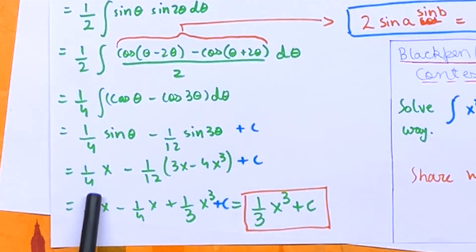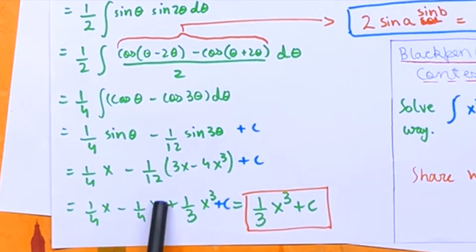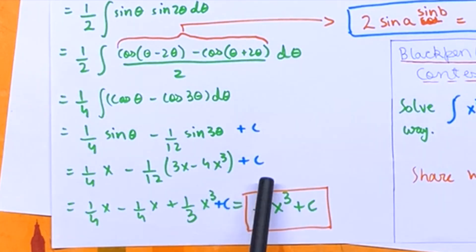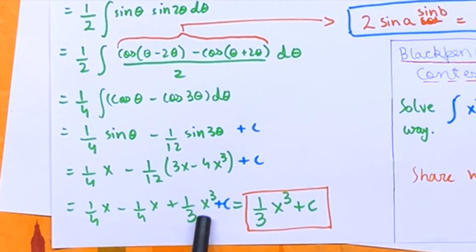Substituting back x is equal to sin theta, we're left with 1/4 x minus 1/12 times (3x minus 4x cubed) plus c. Opening the brackets, all we're left with is 1/3 x cubed plus c. And that is our answer.